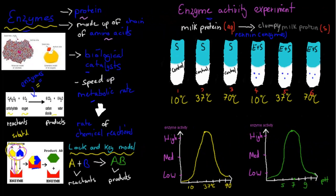You can actually do an experiment called the enzyme activity experiment. You might use different types of substrates; in this case, I'm going to use a milk protein as the substrate. You can see we've put the milk protein — basically a milk liquid — into all of these test tubes. We're going to put, into three of them, an enzyme called renin. Those three test tubes have both the enzyme renin and the substrate, whereas the other ones act as the control without the enzyme.